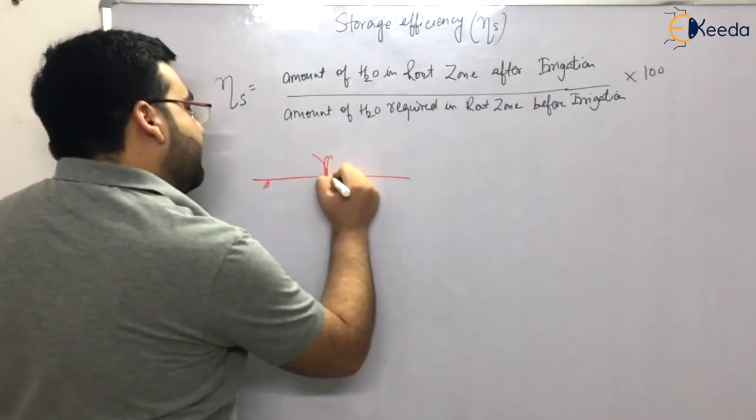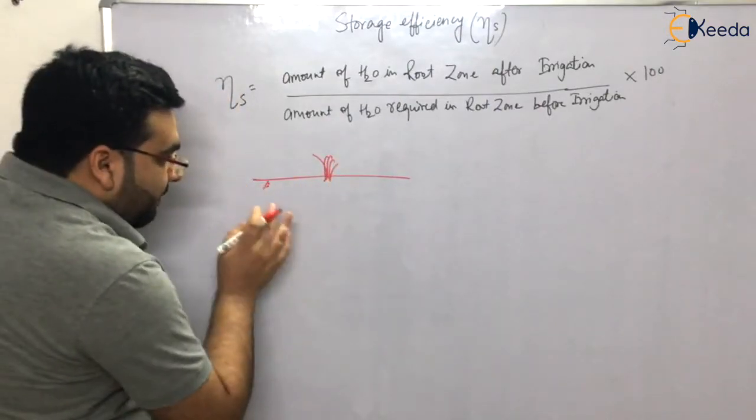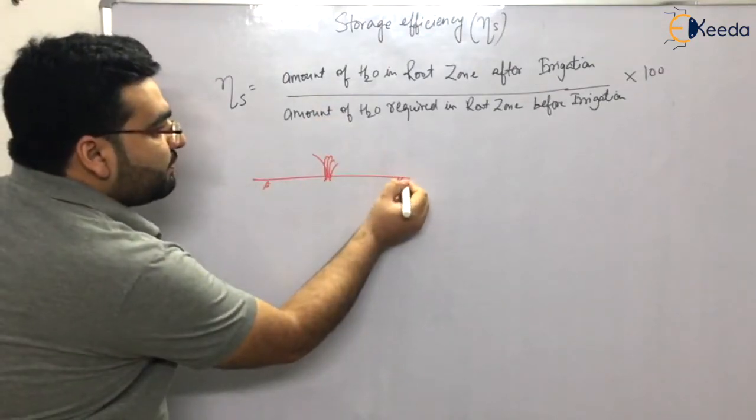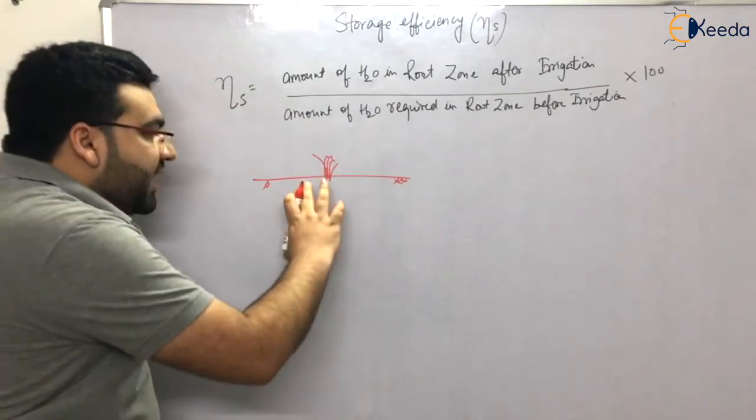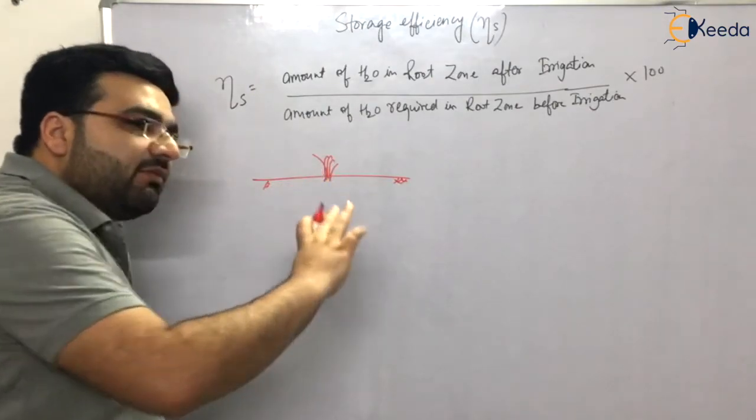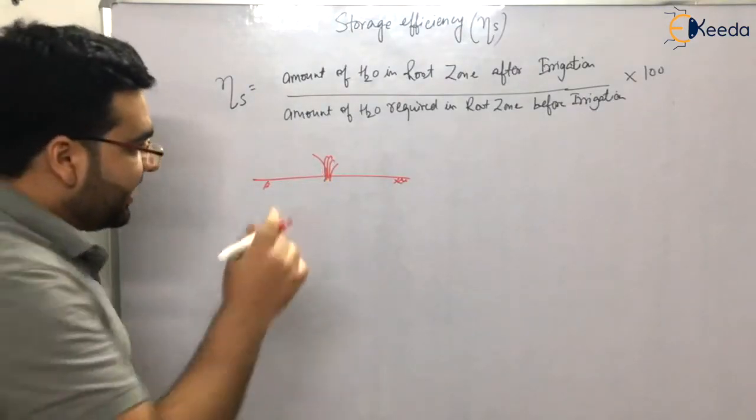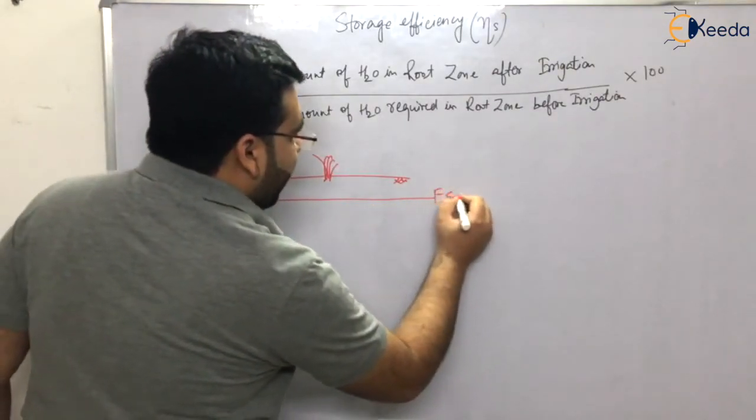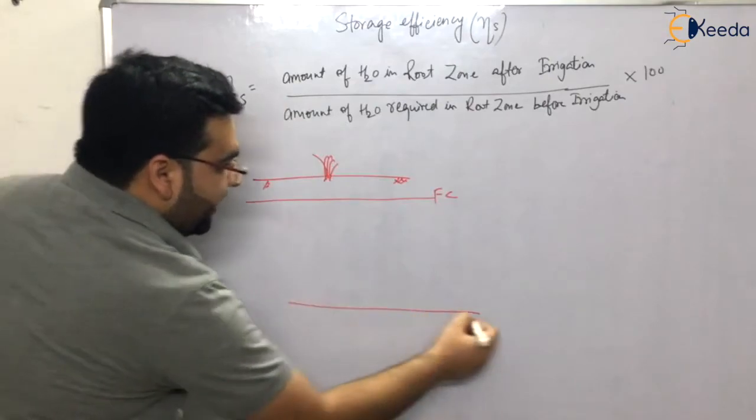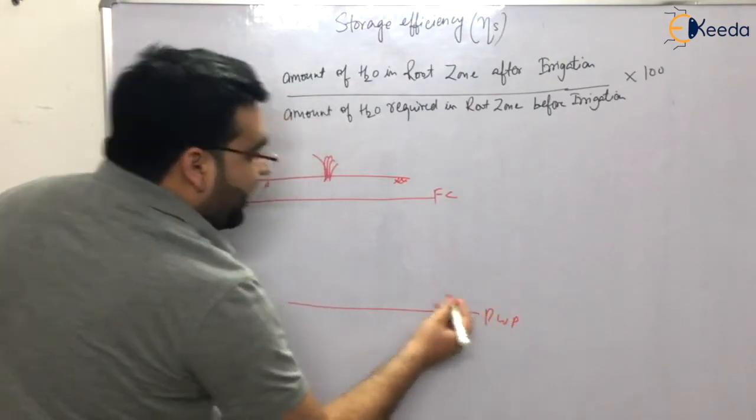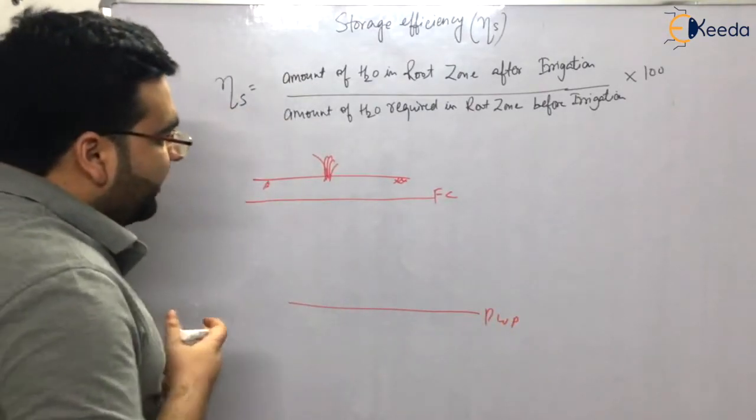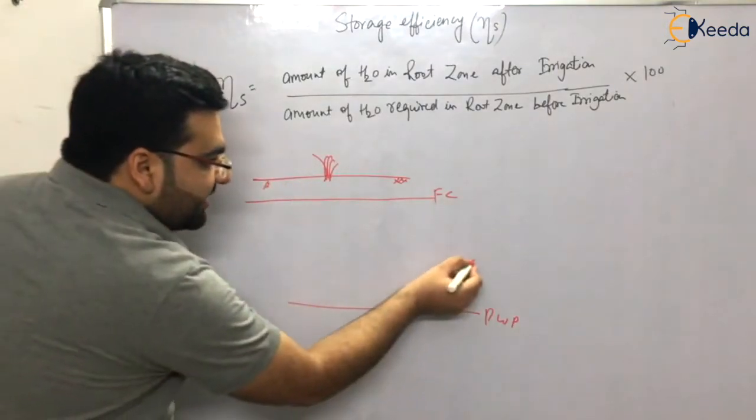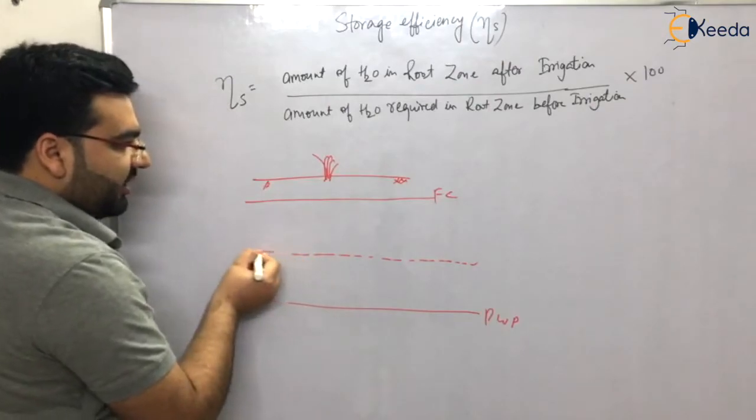This is a crop. Now, before irrigation, before doing irrigation to this particular land, this crop had some water requirement. Let us say that this is the field capacity. This is the permanent wilting point, and let us say that this soil before irrigation had some moisture content. This was some moisture content, this was some moisture.